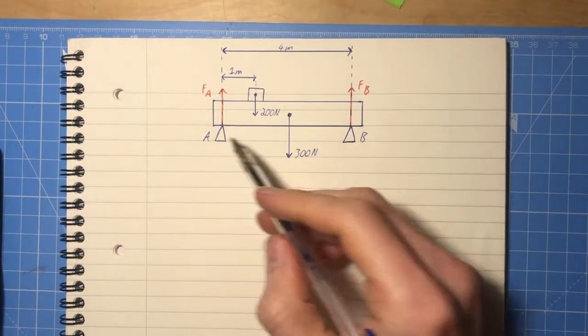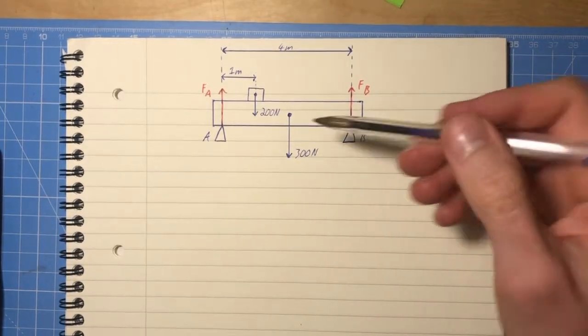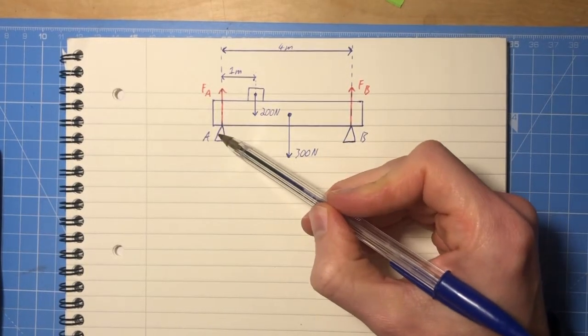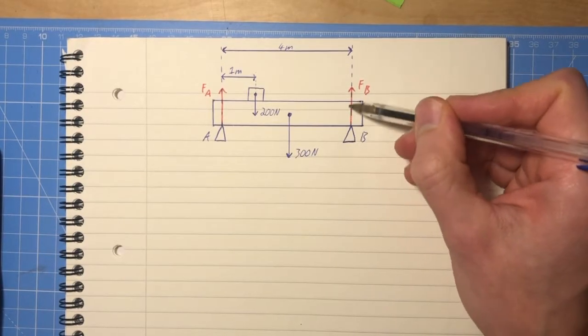Okay, let's have a go at solving this moments problem. So suppose we're given this diagram and we want to find the force in the support A, FA, and the support, the force from this support, FB.